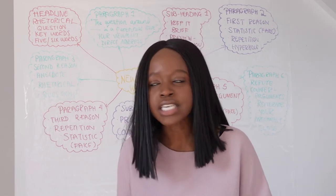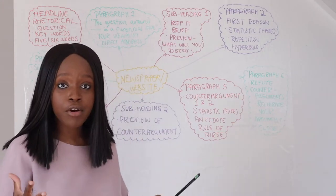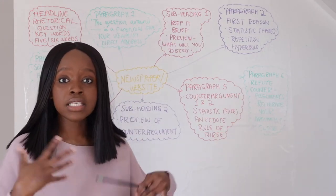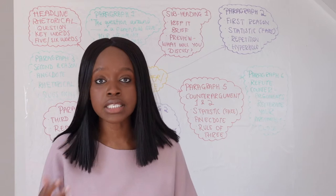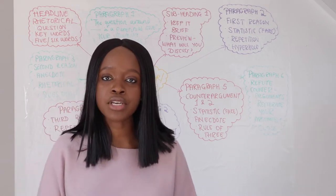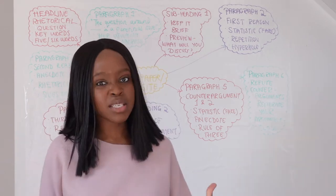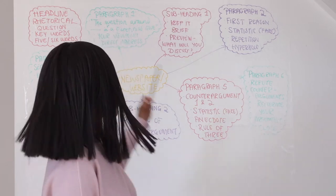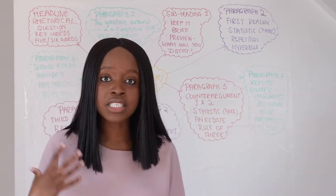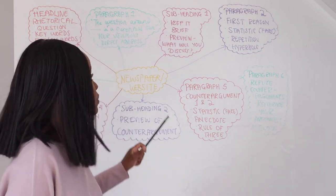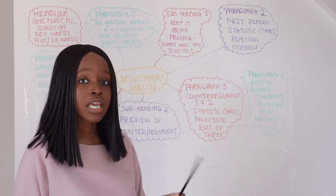After your first paragraph, where you've summarised the side of the argument you stand on — say, for the climate change example, you disagree that it is a big deal — you make that clear in your first paragraph and then summarise all the reasons. However, after your first paragraph you move to your first subheading.